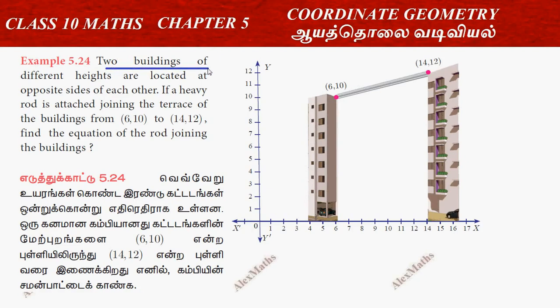Two buildings of different height are located at opposite sides of each other. If a heavy rod is attached joining the terrace of the building from (6,10) to (14,12).